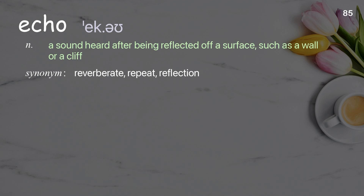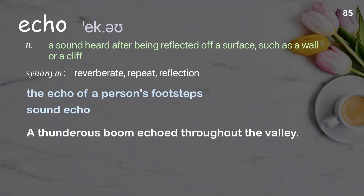Echo: a sound heard after being reflected off a surface, such as a wall or a cliff. Examples: the echo of a person's footsteps, sound echo. A thunderous boom echoed throughout the valley.